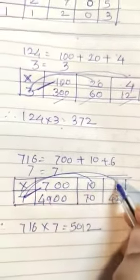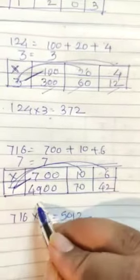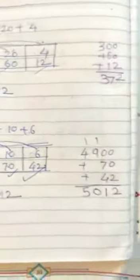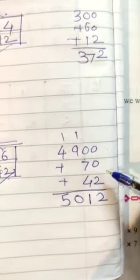And now this. Zero is there? No. 7 sixes are 42. Now add these 3 numbers. 4900, 4900 plus 70 plus 42.